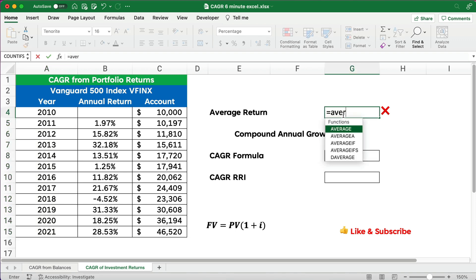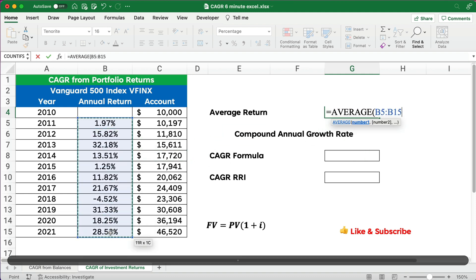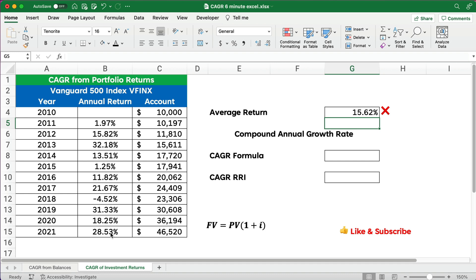Now, this is wrong, but I'm doing it so you can see, hey, this is going to be the wrong way of doing it. So the average return, 15.62, that's not the way we show this. So let's go back and do our compounded annual growth rate formula.